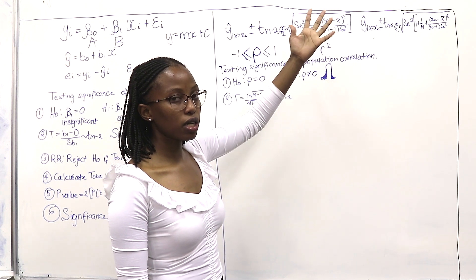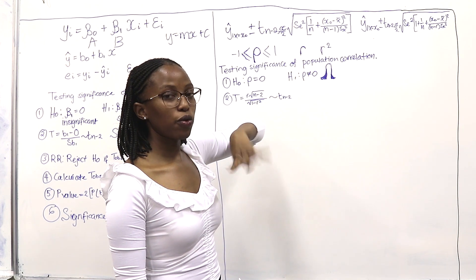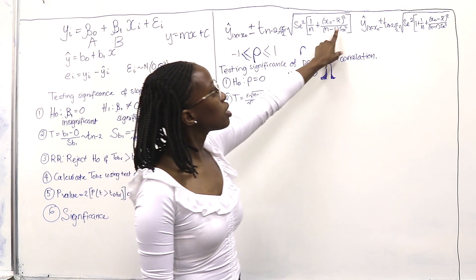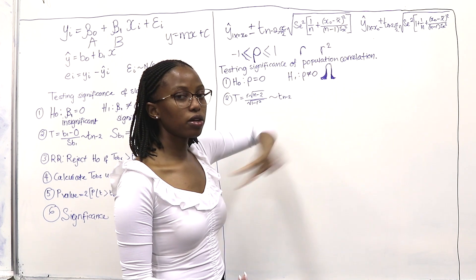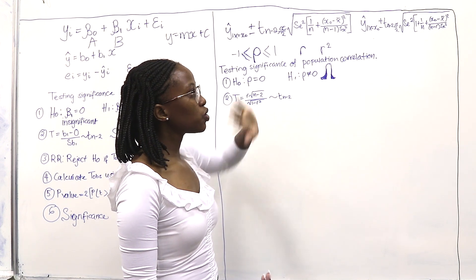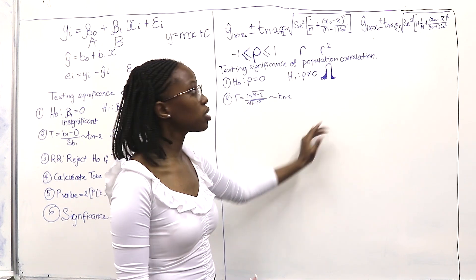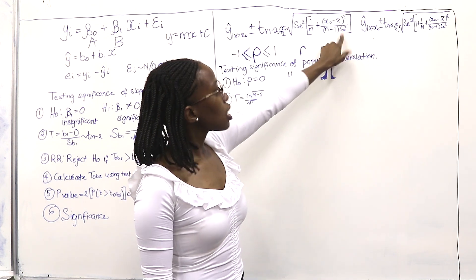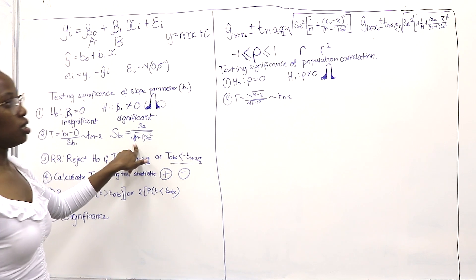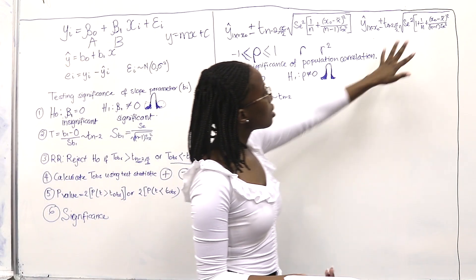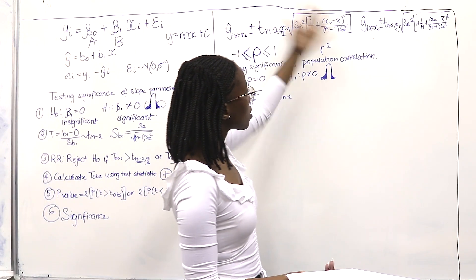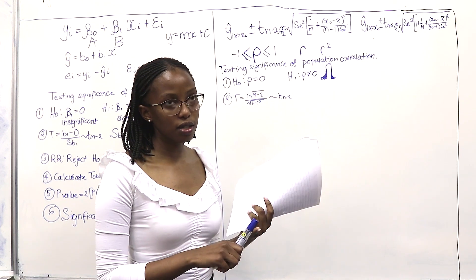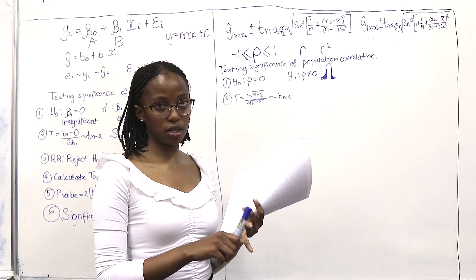X-bar comes from the calculation like every other chapter — the VAR option on your Casio calculator. Make sure it's X-bar and not Y-bar, because now you have two variables, meaning you have both a mean of Y and a mean of X. Sx squared is obtained the same way. For the prediction interval, everything is the same except you add a 1. Take note whether they're asking for the confidence interval or the prediction interval.